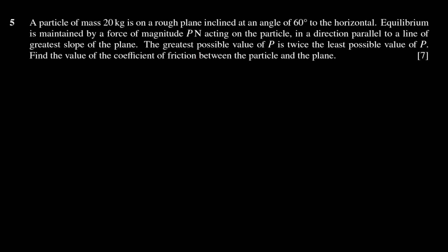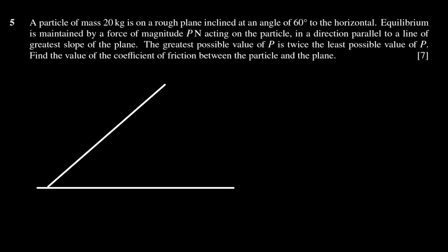As is always the case with these questions, we want to start by drawing a nice big clear diagram. So here is our slope, and here's our particle, and the angle theta is equal to 60 degrees. We should draw on our forces. We're going to have a weight force which acts vertically down, and a normal reaction force that acts perpendicular to the plane — the word normal means perpendicular. So we've got the normal reaction force there and the weight force mg there.